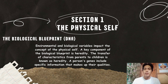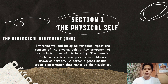Section 1: The Physical Self — The Biological Blueprint or DNA, Environmental and Biological Variables, and Impacts on the Concept of Physical Self. A key component of the Biological Blueprint is heredity. The transfer of characteristics from parents to children is known as heredity. A person's genes include specific information that makes up their qualities.